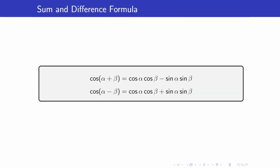Here are the sum and difference formulas for cosine. The cosine of the sum of two angles is equal to cosine of the first angle times cosine of the second angle, minus the sine of the first angle times the sine of the second angle. Take note that the only difference between the sum and difference formulas is that the signs are always reversed — you always have the opposite operations.